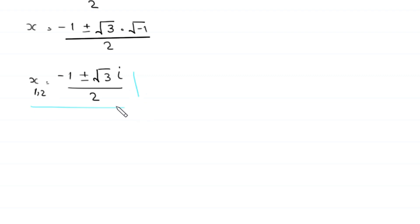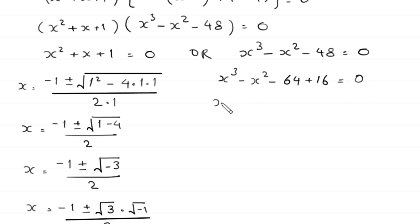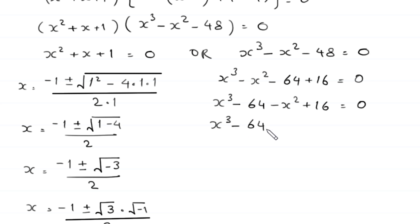To find the other three solutions, we solve the cubic equation x cubed minus x squared minus 48 equals 0. We write negative 48 as negative 64 plus 16, so x cubed minus 64 minus x squared plus 16 equals 0. Taking a negative sign outside the parenthesis gives x cubed minus 64, minus x squared minus 16, equal to 0.